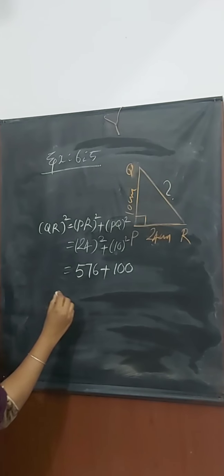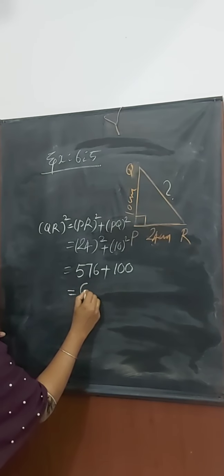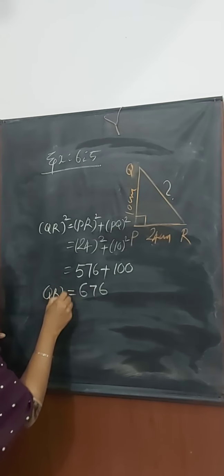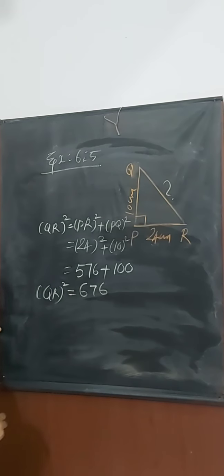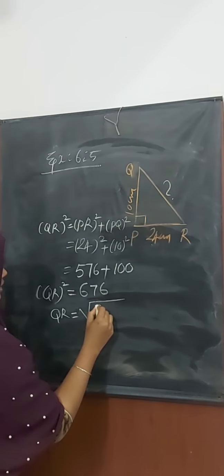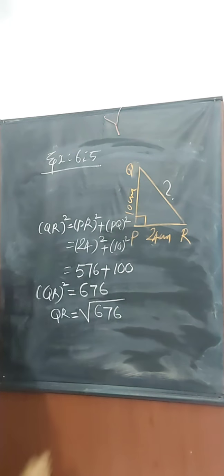576 plus 100, we get 676. QR square equals 676. QR equals root 676.